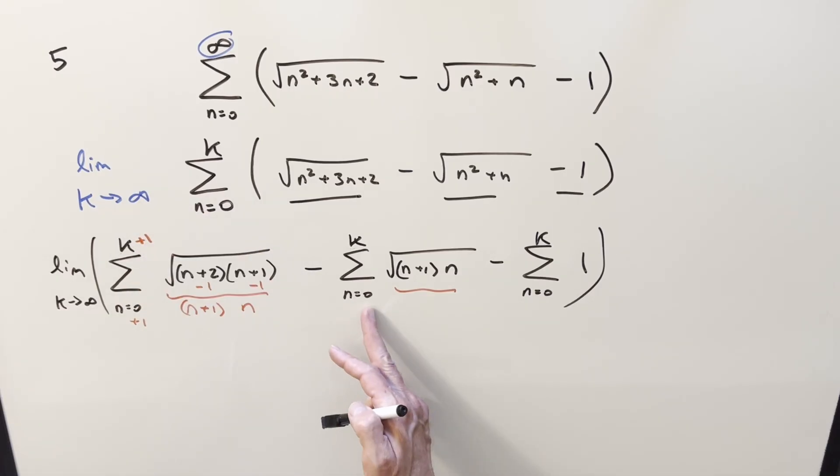But then one other thing you might notice, the n equals zero term doesn't actually do anything. Doing the index on the bottom didn't really matter there, but we're going to change it anyway because it's all zero. You plug a zero when you get zero. So I can make this one here a one.